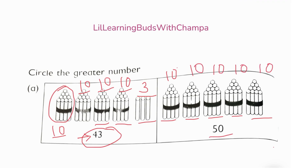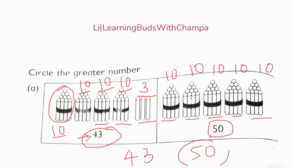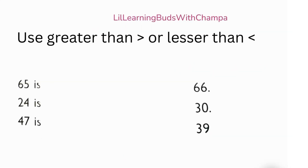Similarly, we count the other group — they are piles of 10 each. So 10 plus 10 plus 10 plus 10 plus 10 plus 10 plus 10 plus 10 makes 50. So now, is 43 greater or is 50 greater? You need to know your numbers. Yeah — 50! 50 is greater than 43. Very good!